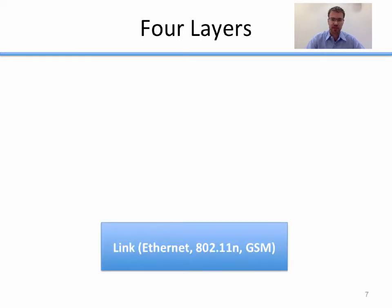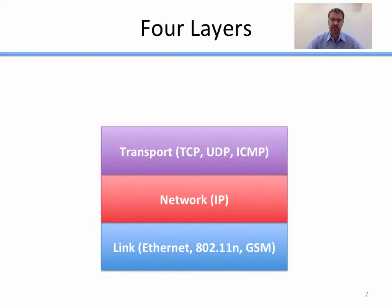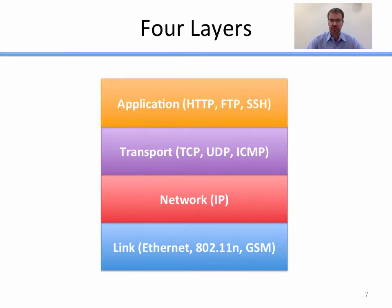So what are the four layers? The bottom layer is the link layer — Ethernet, 802.11, or GSM, whatever the physical mechanism is for routing packets. Above that is the network layer, and the most common protocol there is IP, the Internet Protocol. Above the network layer is the transport layer, which defines what runs on top of the network layer — things like TCP, UDP, and ICMP. And then on top of the transport layer is whatever application you're running. So the four real layers are: link, network, transport, and application.